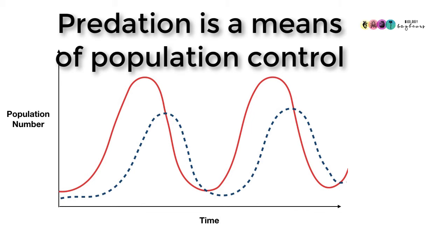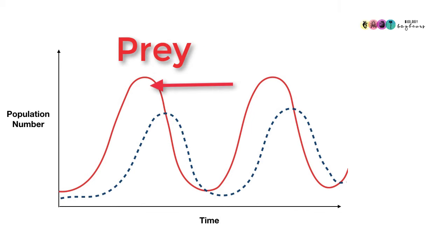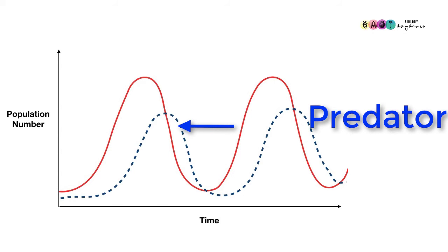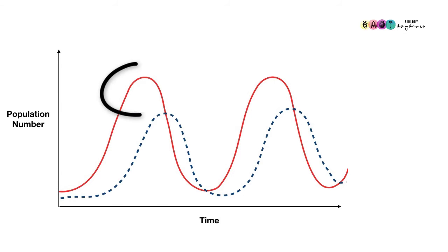In this predator-prey graph, you can see that the red is the prey and the blue dotted line is the predator. When prey numbers are at their highest, it's because those predator numbers are not matching them. This allows for those prey numbers to be at their maximum. However, eventually more predators, their numbers increase. They move into the area in response to all that food and they start to feed and to kill the prey.